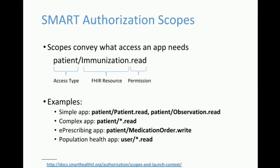This scope language is fairly simplistic — it allows apps to request data segregated by FHIR resource type. There are real limitations; for example, the Observation resource in FHIR is used for many kinds of data — lab tests, vital signs, social history — it's a flexible tool. With this scope language, it's all or nothing: you ask for Observation or you don't. So a growth chart app would actually get access broader than just heights and weights — it's all observations. This is a known trade-off between interoperability and fine-grained system-specific control.